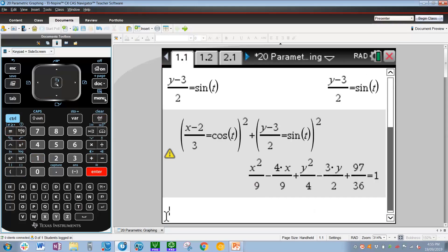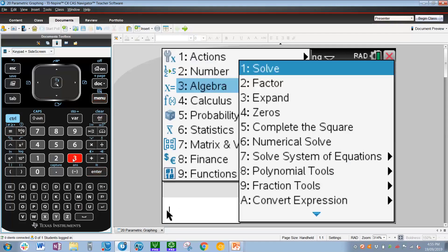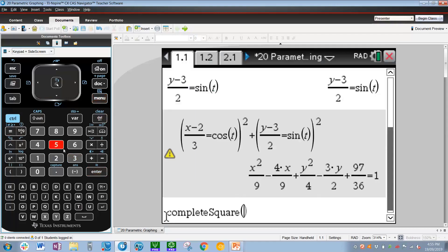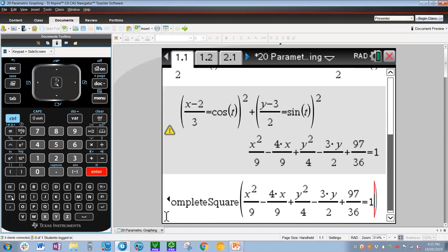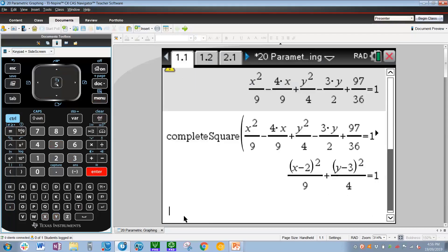We can now use complete the square to convert it into the form we're used to. Menu, 3 for algebra, 5 for complete the square. Press up and enter to copy and paste, comma x, comma y for the variables, enter. So there is the equation of the ellipse, which is x minus 2 all squared on 9 plus y minus 3 all squared on 4 is equal to 1.